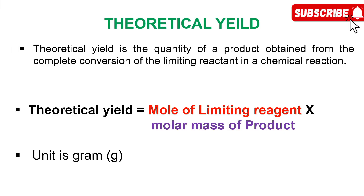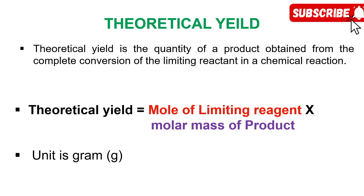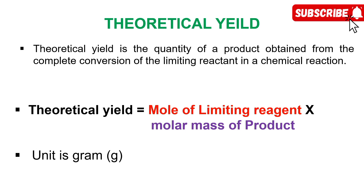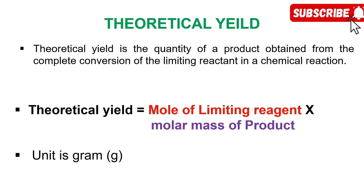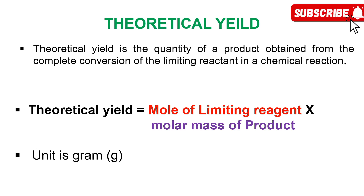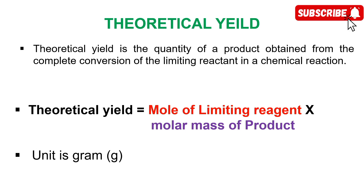The theoretical yield is defined as the quantity of product obtained from complete conversion of the limiting reagent in a chemical reaction. To calculate it, you take the moles of the limiting reagent, which is determined by its molar mass, then multiply by the molar mass of the product. The unit is grams.